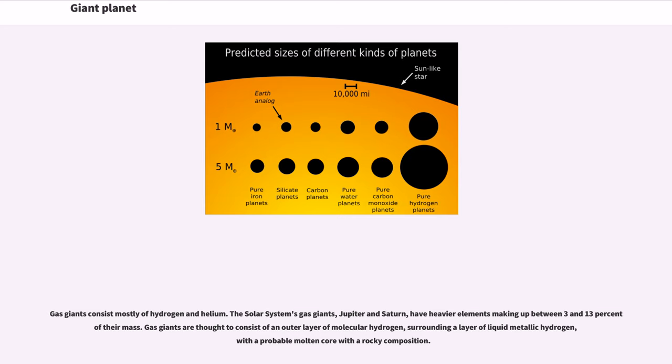Gas giants consist mostly of hydrogen and helium. The solar system's gas giants, Jupiter and Saturn, have heavier elements making up between 3 and 13 percent of their mass. Gas giants are thought to consist of an outer layer of molecular hydrogen, surrounding a layer of liquid metallic hydrogen, with a probable molten core with a rocky composition.